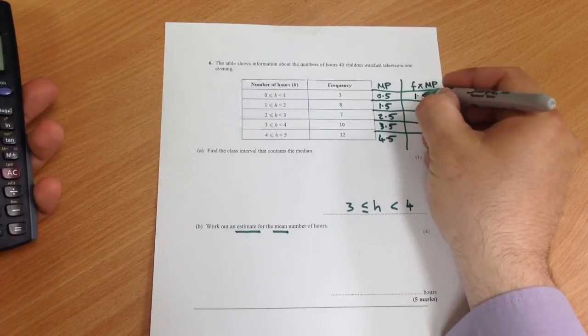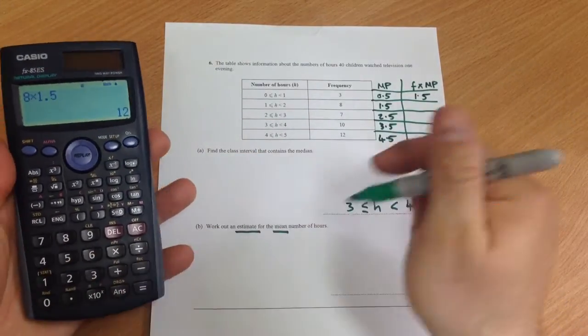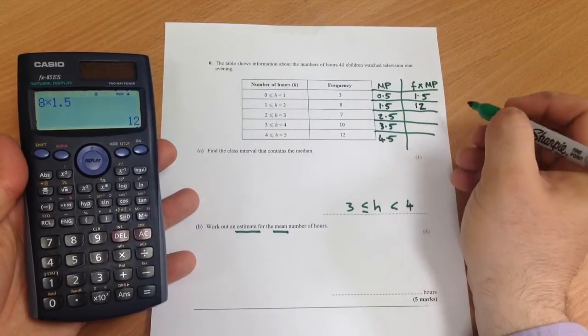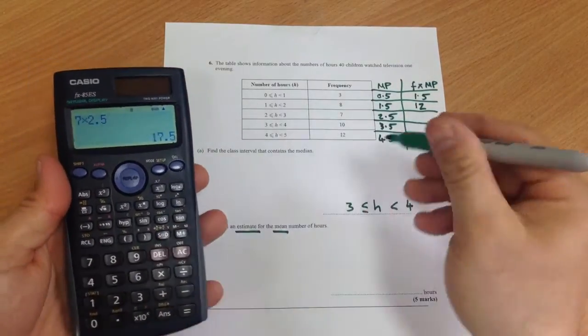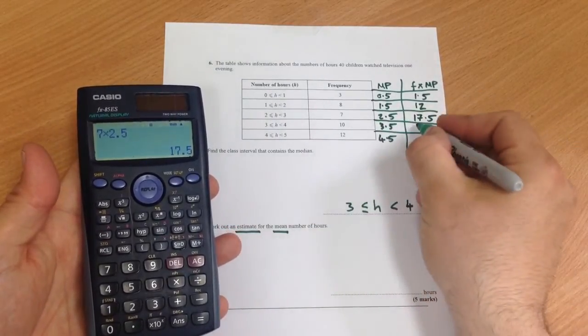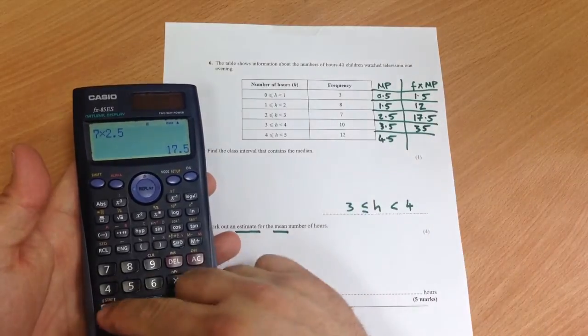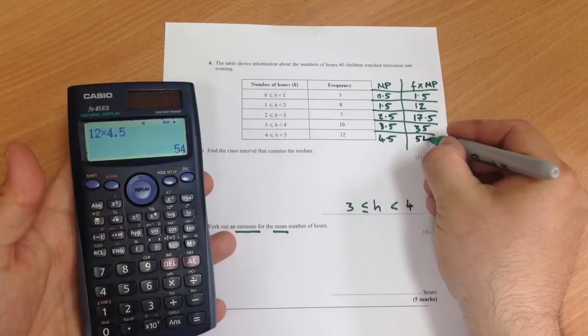3 times 0.5 is 1.5, 8 times 1.5 is 12, 7 times 2.5 is 17.5, 10 times 3.5 is 35, 12 times 4.5 is 54.